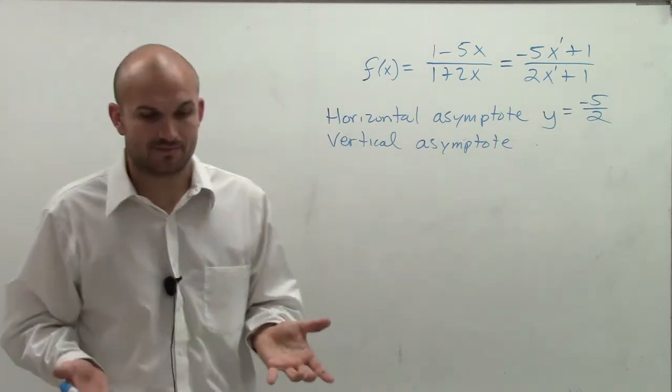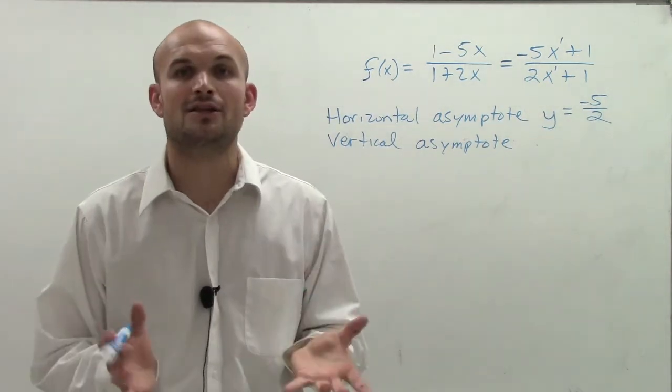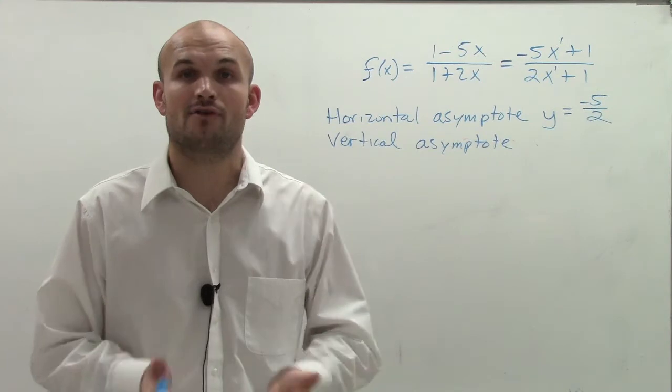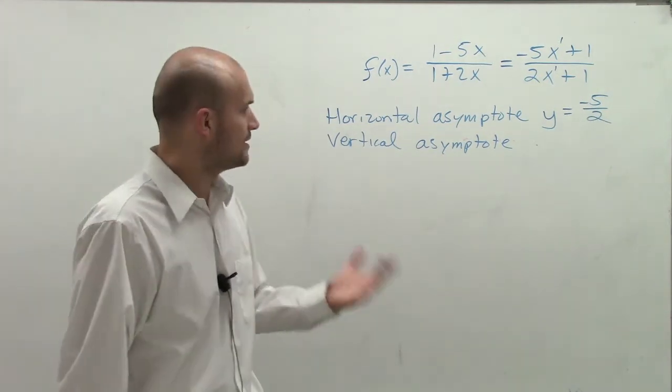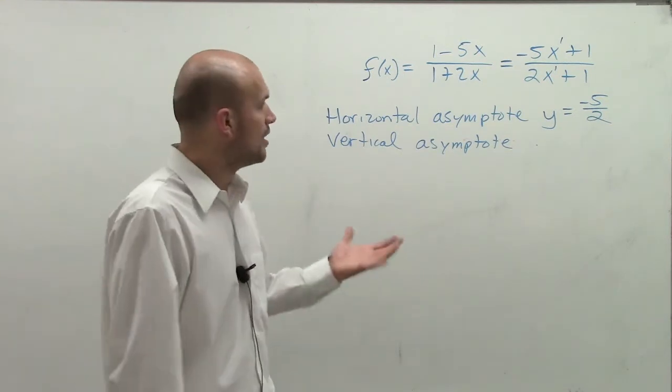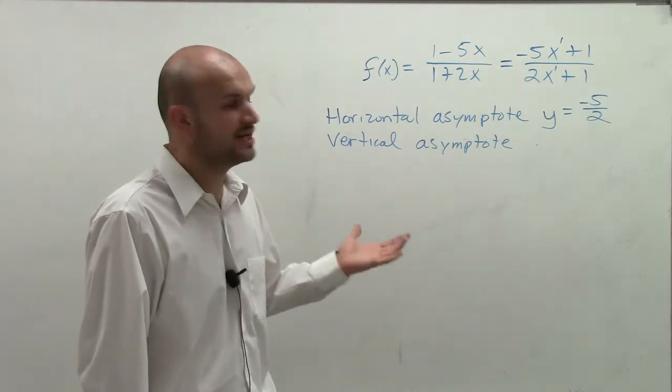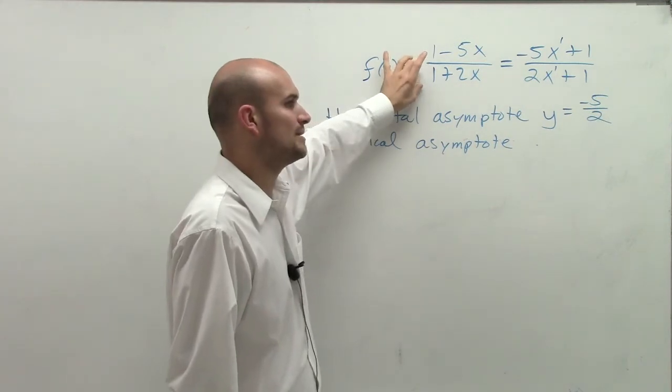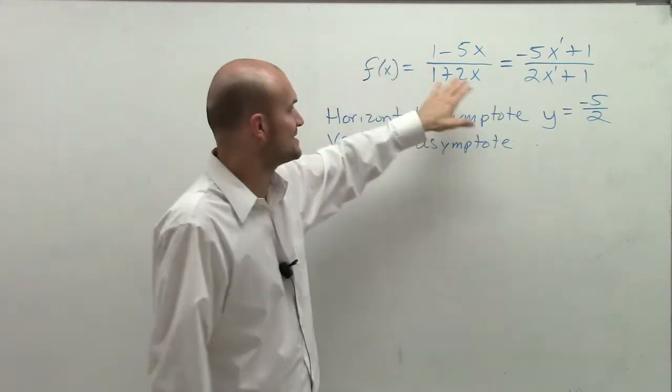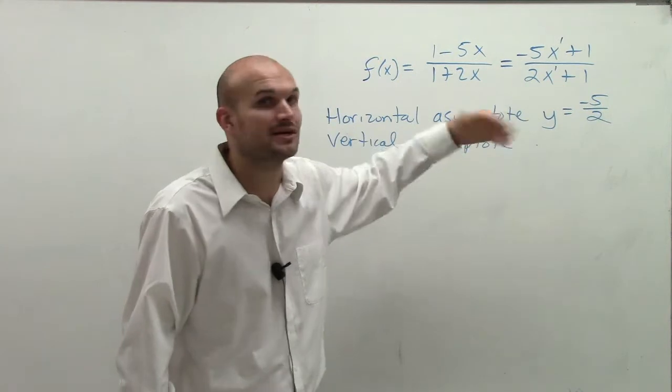Now for the vertical asymptote, remember we've got to look at what's not going to be a part. Our vertical asymptote is what's going to be absent from our domain. So we look at what could be our restrictions in our domain. And since we have a polynomial up top and a polynomial on the bottom, the one restriction that's evident to me is our denominator cannot equal 0.